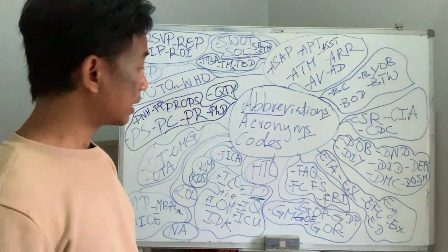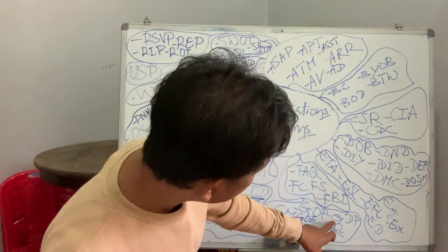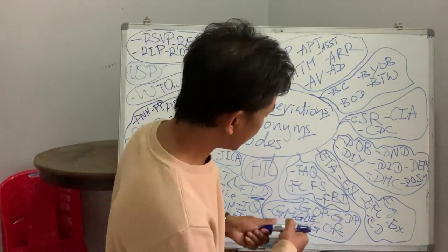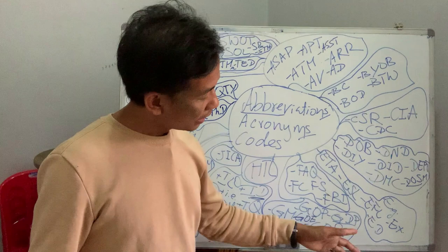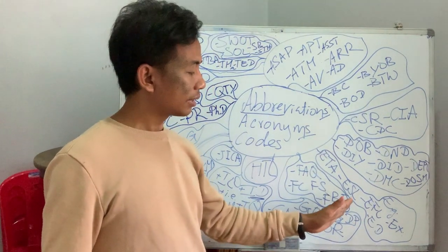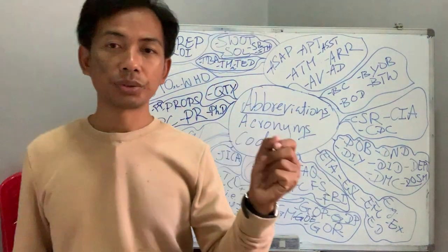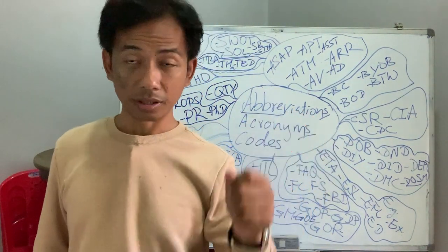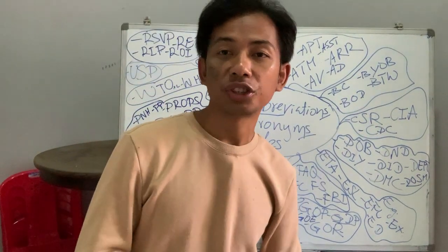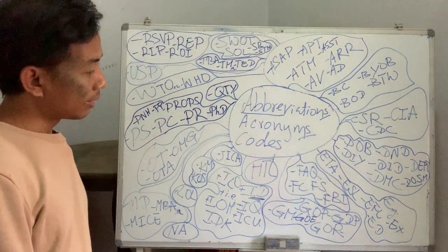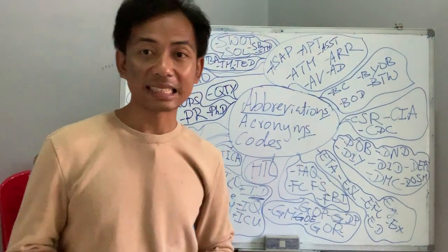GDP — gross domestic product — used to tell if a country is growing or not. You can see the number: GDP developed by seven percent, twelve percent. This year I believe no country in the world got an increase in GDP.